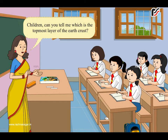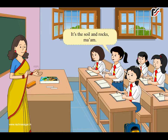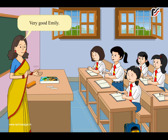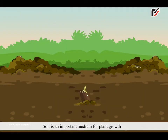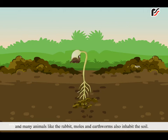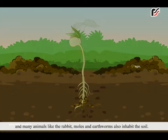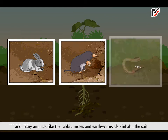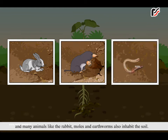Children, can you tell me which is the topmost layer of the earth's crust? It's the soil and rocks, ma'am. Very good, Emily. Soil is an important medium for plant growth, and many animals like the rabbit, moles and earthworms also inhabit the soil.